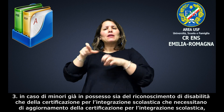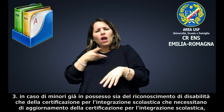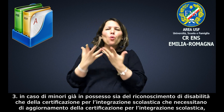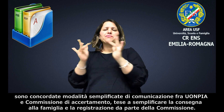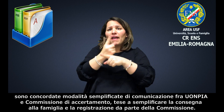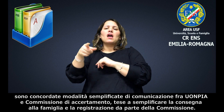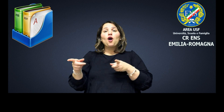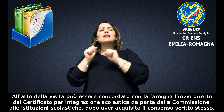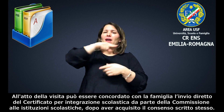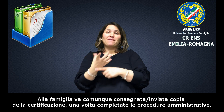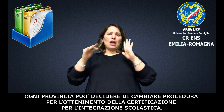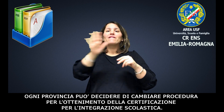In caso di minori già in possesso sia del riconoscimento di disabilità che della certificazione per l'integrazione scolastica che necessitano di aggiornamento della certificazione o di qualche modifica, sono concordate modalità semplificate di comunicazione tra UOMPIA e commissione di accertamento, tese a semplificare la consegna da parte della commissione alla famiglia e la registrazione. All'atto della visita può essere concordato con la famiglia l'invio diretto del certificato per l'integrazione scolastica alle istituzioni scolastiche, dopo aver acquisito il consenso scritto. Alla famiglia va comunque consegnata o inviata una copia della certificazione. Ogni provincia può decidere di cambiare procedura per l'ottenimento della certificazione per l'integrazione scolastica.